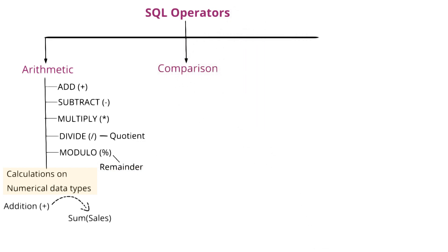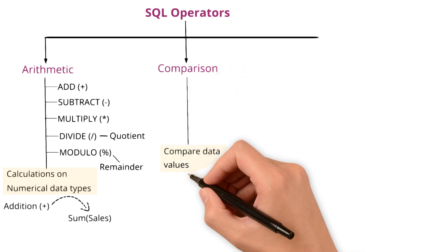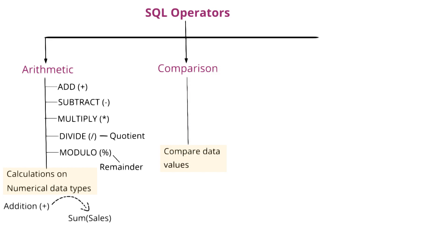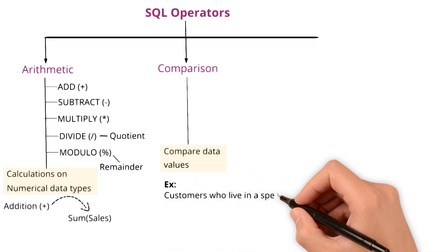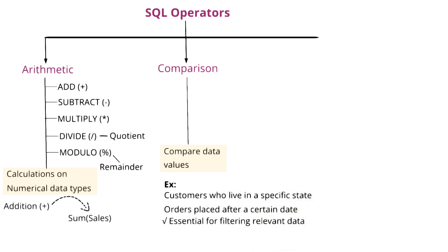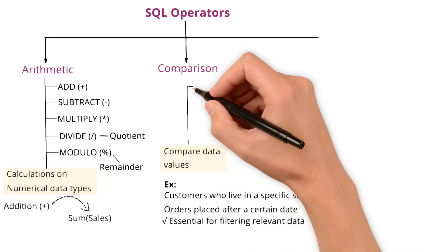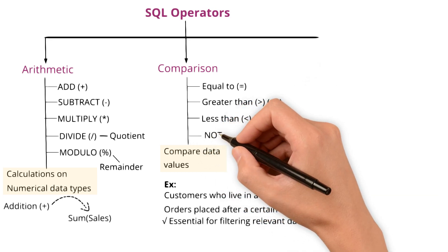Next, comparison operators. As the name suggests, comparison operators help you compare data values and filter based on those comparisons. For example, you could find customers who live in a specific state or orders placed after a certain date. Comparison operators are essential for filtering and retrieving relevant data. And the different comparison operators: equal to, greater than, less than, greater than or equal to, less than or equal to, not equal to.